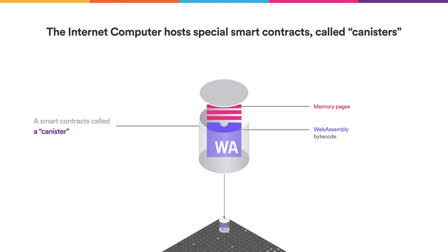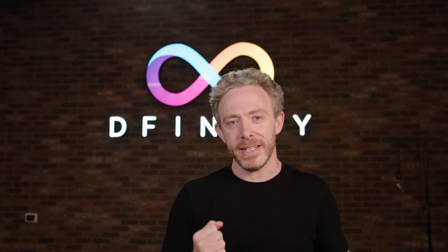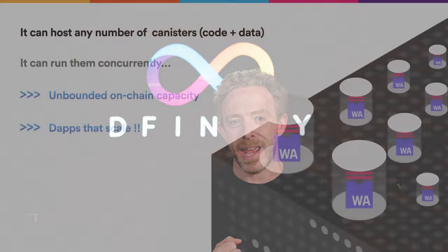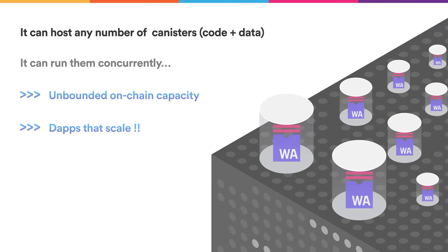A key breakthrough is that the Internet Computer can host any number of canister smart contracts, and therefore any amount of data fully on-chain. Moreover, it can run them concurrently, which means that it can process any amount of computation.